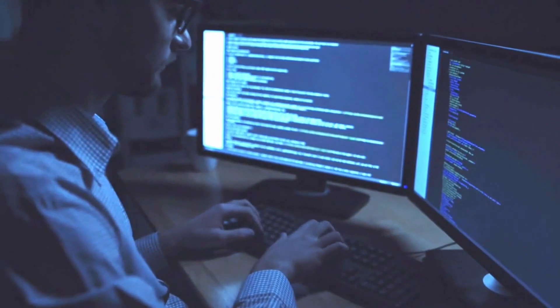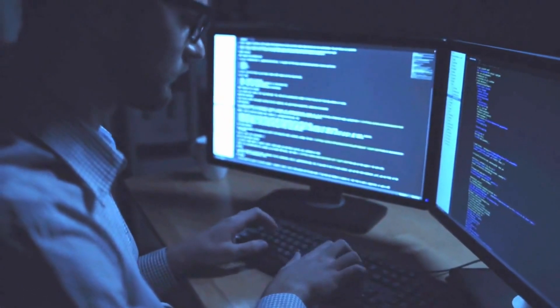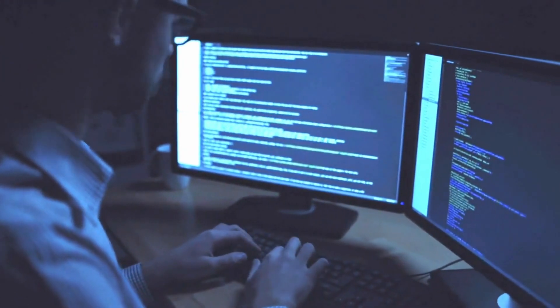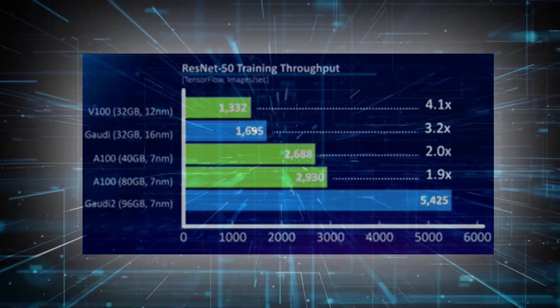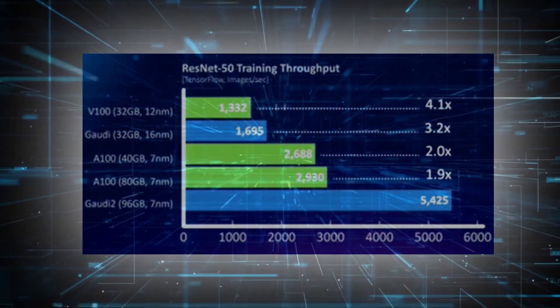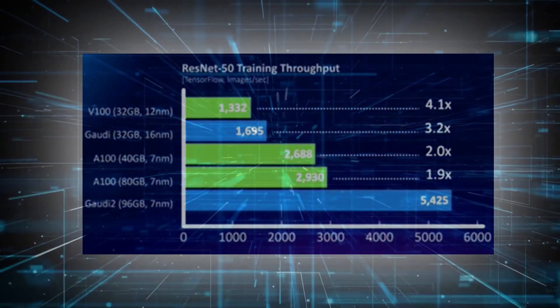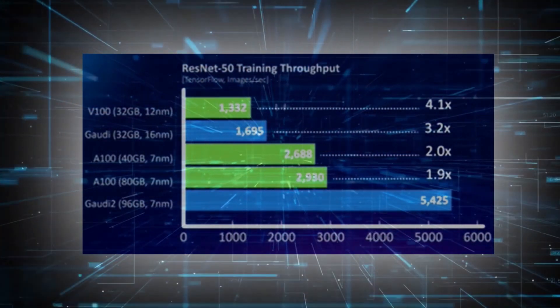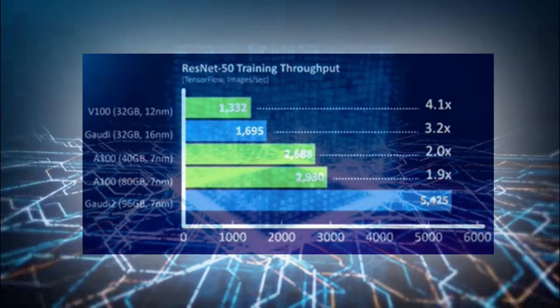Intel showed a few comparisons between Gaudi 2, its predecessor, and the competition on a handful of popular tasks. On ResNet 50, Gaudi 2 achieved 3.2 times the output of Gaudi, 1.9 times that of an 80GB NVIDIA A100, and 4.1 times that of an NVIDIA V100.